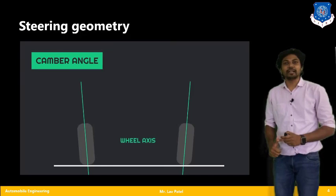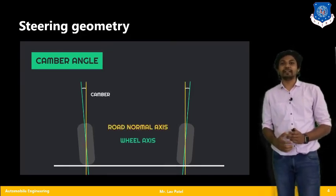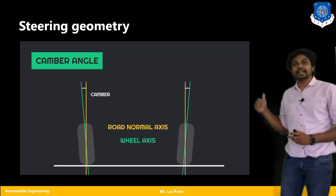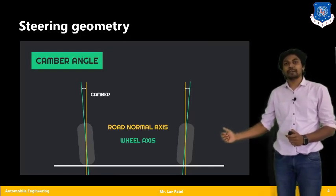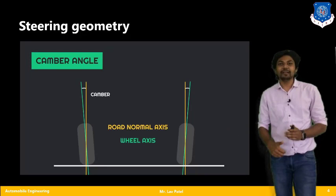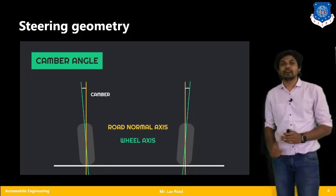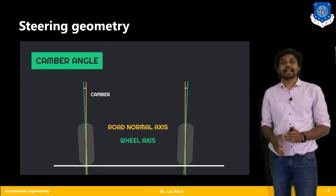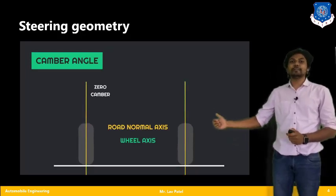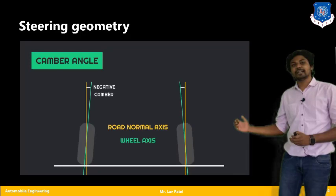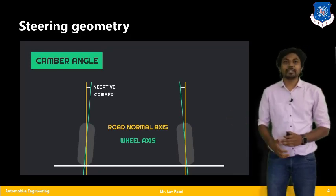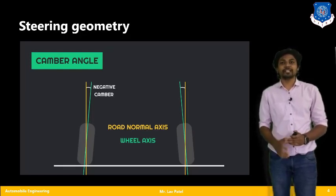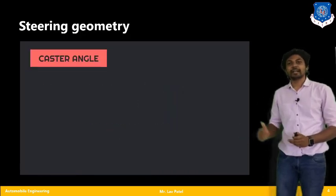Let us consider the first parameter: camber angle. Viewing the vehicle from the front, we check the front wheel axis (shown in green) and the road normal axis (shown in yellow). The angle between the wheel axis and the road normal axis is called camber. Camber can be positive, negative, or zero. For light motor vehicles and trucks, a positive camber angle is preferred for better steering geometry performance.